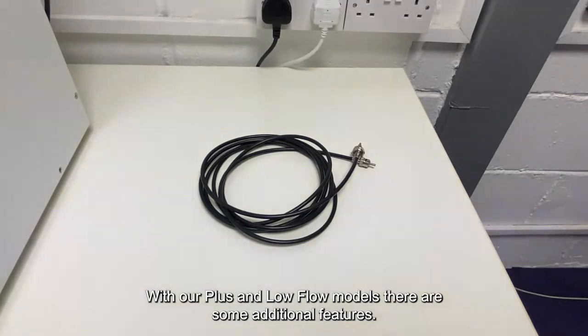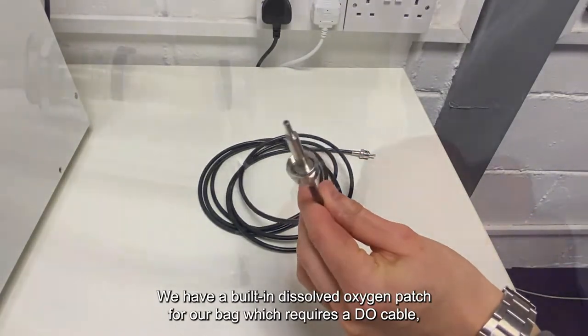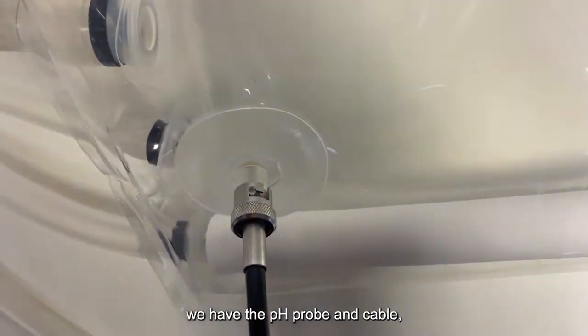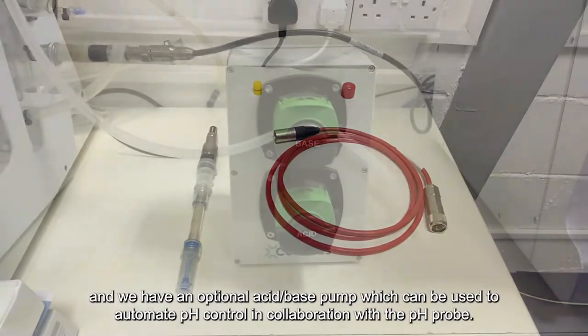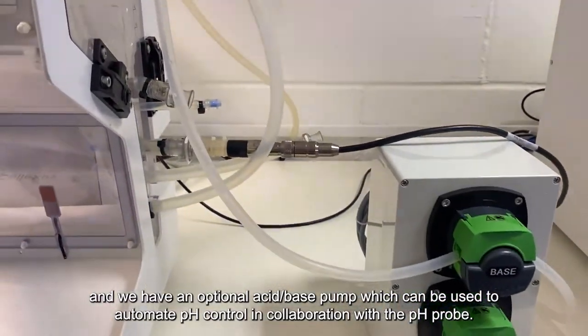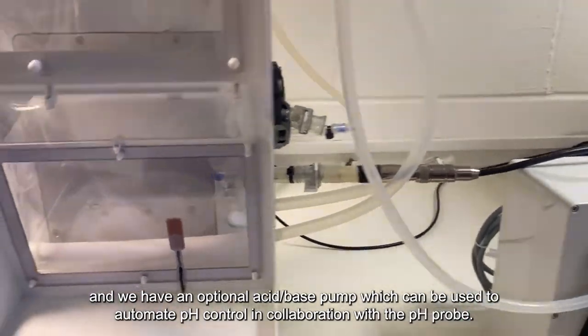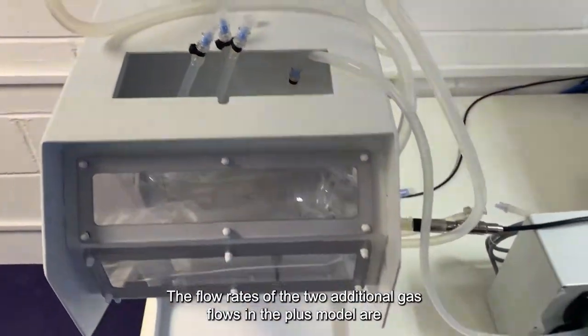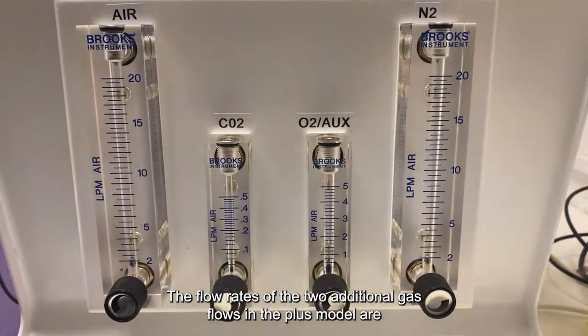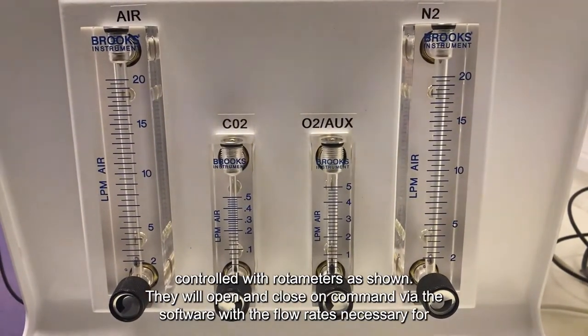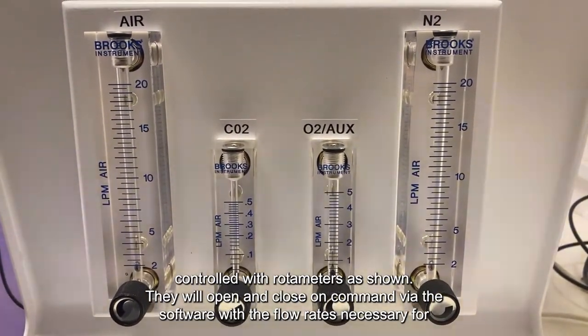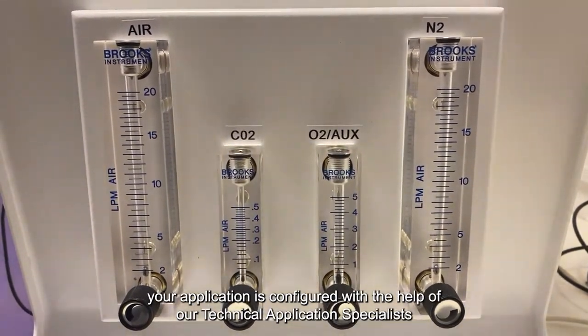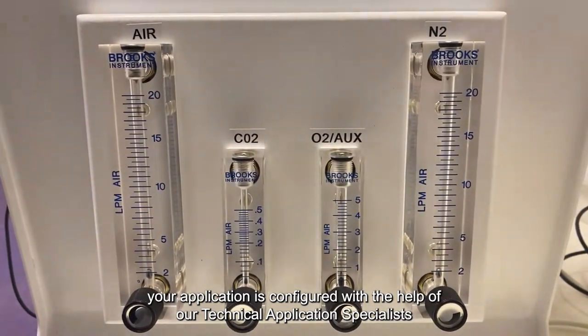With our plus and low flow models, there are some additional features. We have a built-in dissolved oxygen patch for our bag, which requires a DO cable. We have the pH probing cable. And we have the optional acid-base pump, which can be used to automate pH control in collaboration with the pH probe. The pH can also be automated with the controller through the controlled injection of CO2. The flow rates of the two additional gas flows in the plus model are controlled with the rotometers as shown. They will open and close in command via the software, and the flow rates necessary for your application is configured with the help of our technical application specialists prior to running.